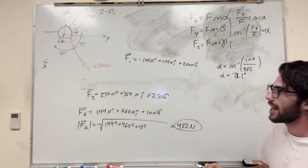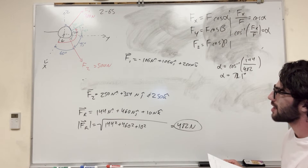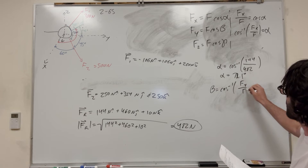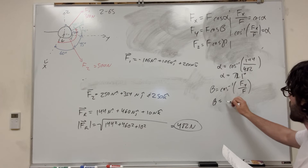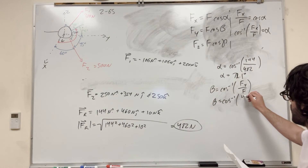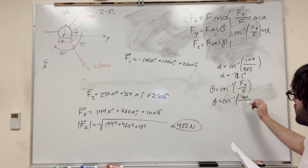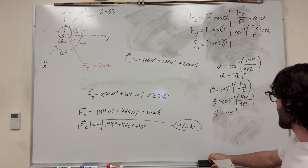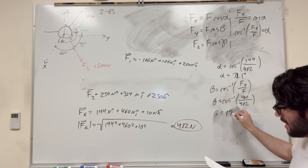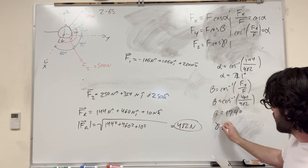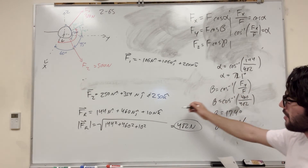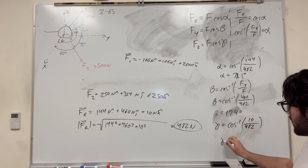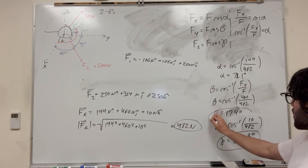Beta is the same approach: inverse cosine of Fy over the total force. That's inverse cosine of 460 over 482, giving us 17.4 degrees. Gamma is inverse cosine of Fz over the total force — inverse cosine of 10 over 482 — giving us 88.8 degrees. So our three coordinate direction angles are alpha equals 72.1°, beta equals 17.4°, and gamma equals 88.8°.